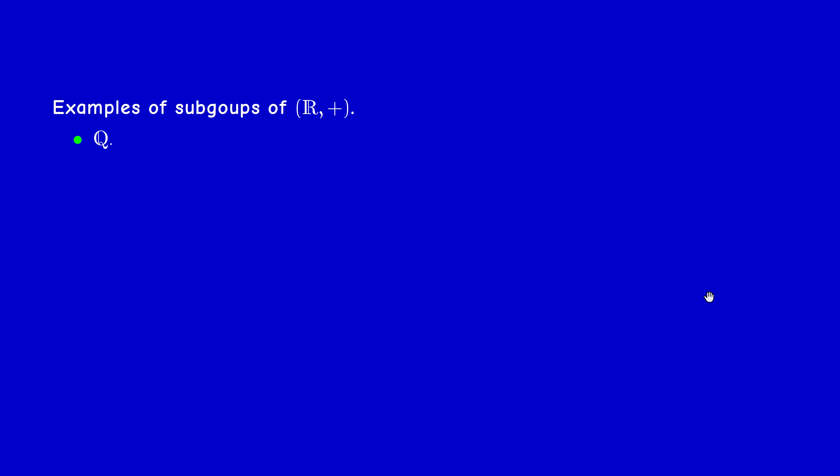Let us first recall some examples of subgroups. There are a lot of subgroups of R. For example, Q, the set of rational numbers, is a subgroup of R. Z is a subgroup. N is not a subgroup because it's not stable under the operation of taking opposites. aZ, which is the set of multiples of a for a certain number a in R, is also a subgroup.